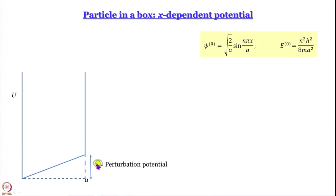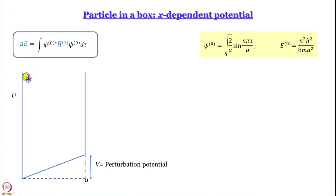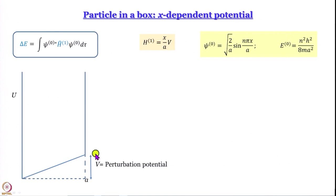Now we bring in the perturbation to arrive at our box with a slanting bottom. At x = 0 the perturbation potential is zero and at x = a it is capital V — so we have a straight line through the origin. Therefore H1-hat for any value of x is (x/a)·V. This is quite simple: x divided by a multiplied by V, where V is the value of the potential at x = a.